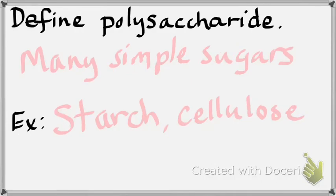A second example of a polysaccharide is cellulose — your parents call it fiber. It's structural. Can you digest cellulose? No. But it should be in your diet because it moves food through the digestive tract and fills you up, helping with weight control. Cellulose is good for you.